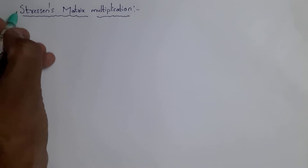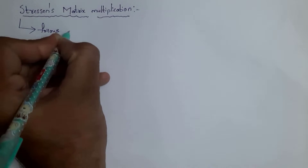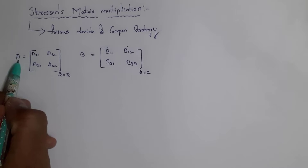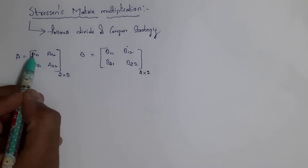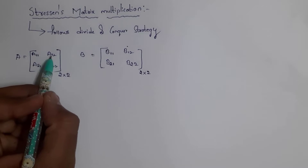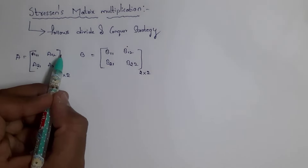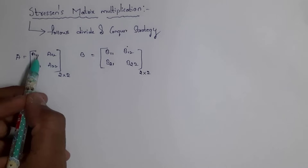First point: Strassen's matrix follows divide and conquer strategy. We can perform Strassen's matrix multiplication only on a square matrix. A square matrix is one in which the number of rows is equal to the number of columns. For example, I took two matrices — matrix A and matrix B. Inside matrix A I written a11, a12, a21, and a22. This is a square matrix because it contains two rows and two columns.